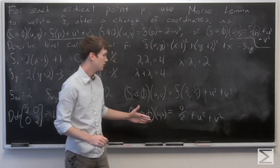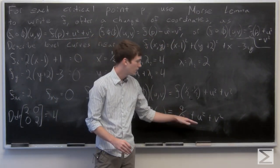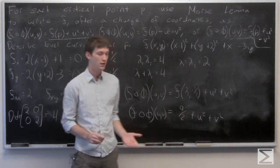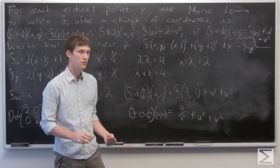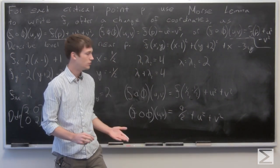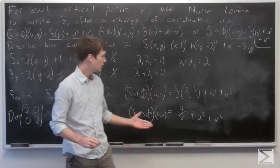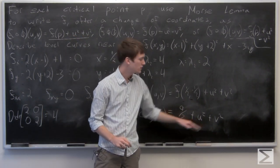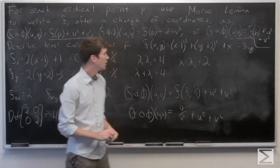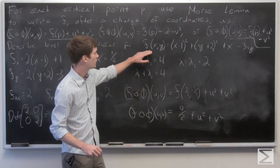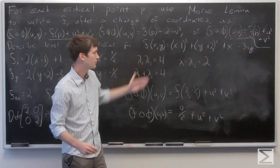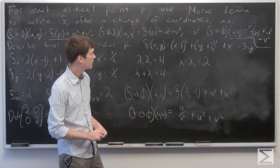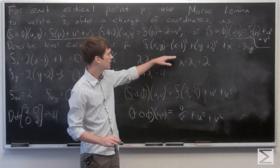It's important to note that Morse Lemma just tells us of the existence of this change of coordinates — it's not necessarily going to be easy to calculate what that change of coordinates will be. But just for the sake of the fact that we can, I'm going to go ahead and calculate it in this case.